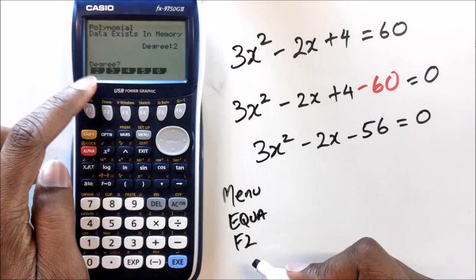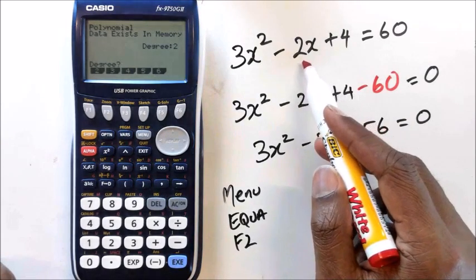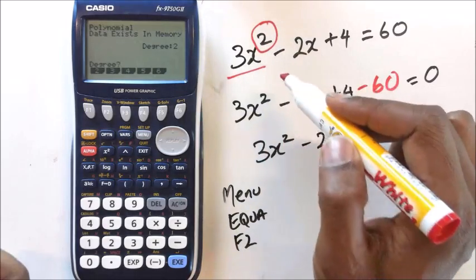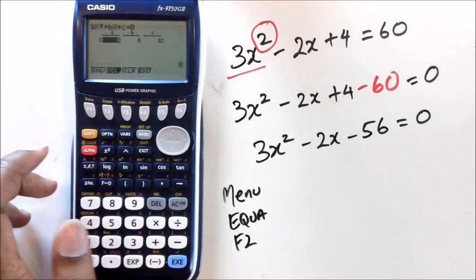Now, you want to use degree as 2, because what it's really asking you is, what's the biggest power that you have for x? That's what it means by degree. So if you have a look at this equation, you've got x, and then you've got x squared. So that number 2 is what the degree is, the highest degree. So in this case, I'm going to 2.